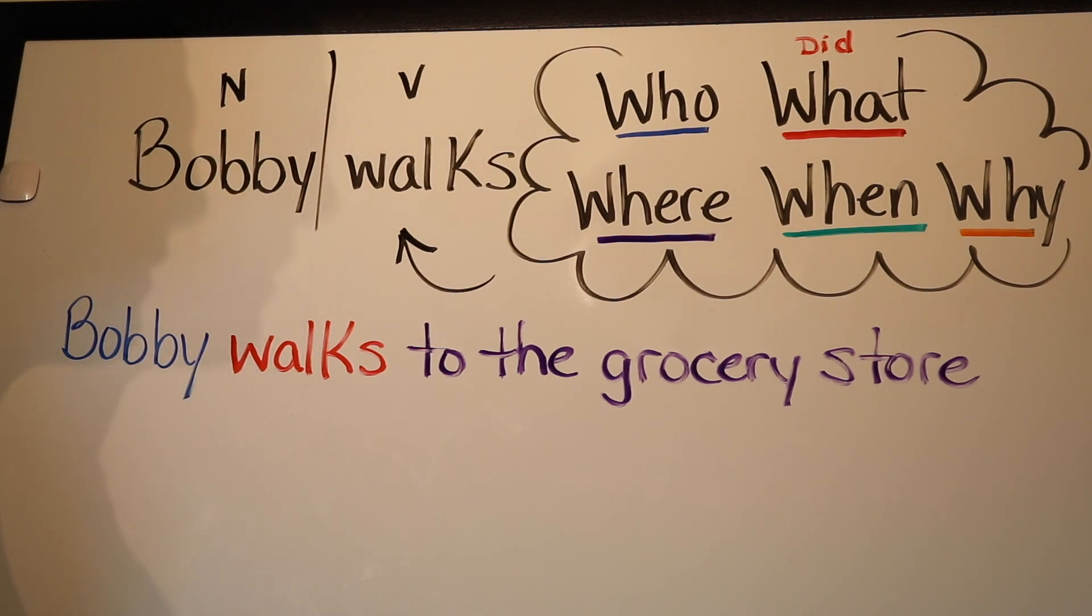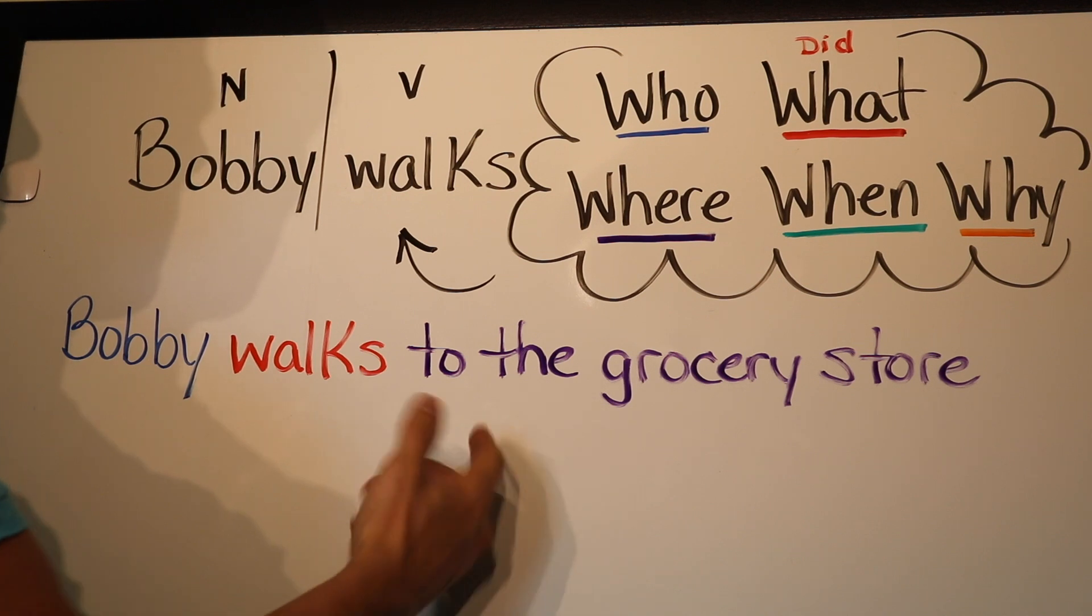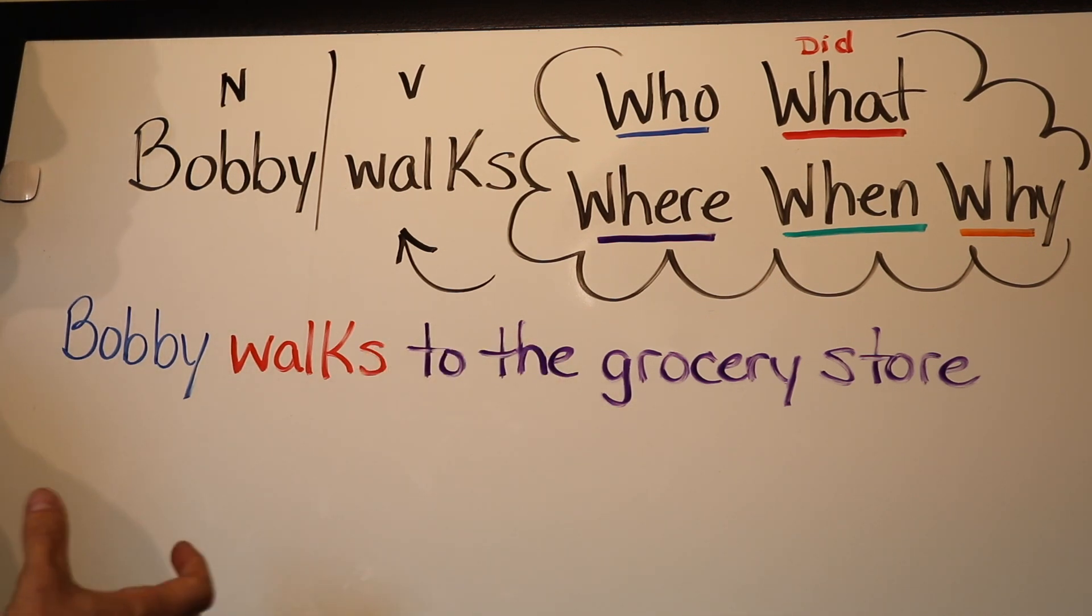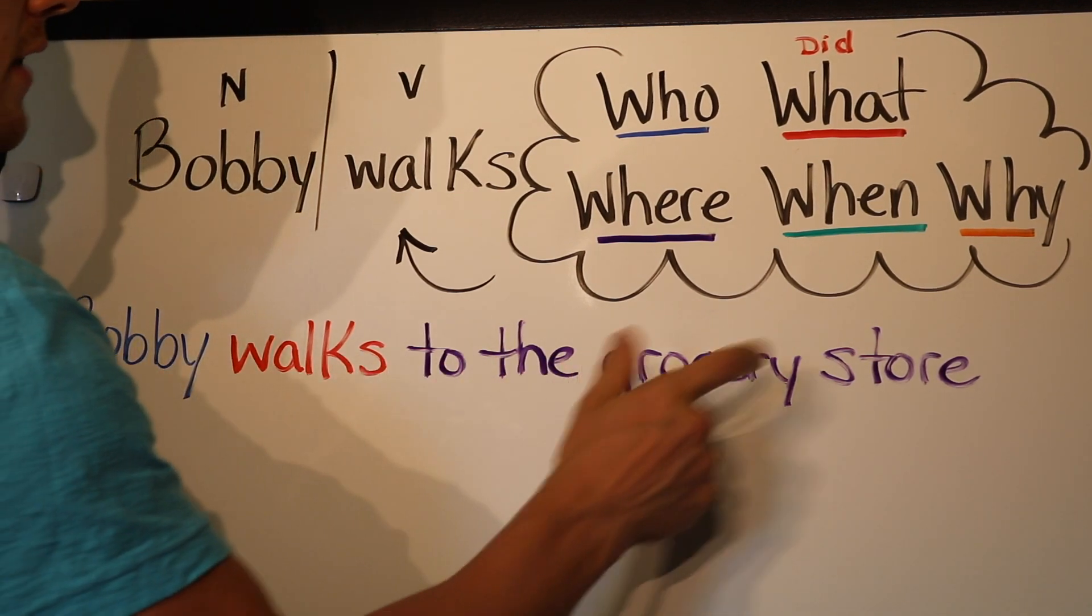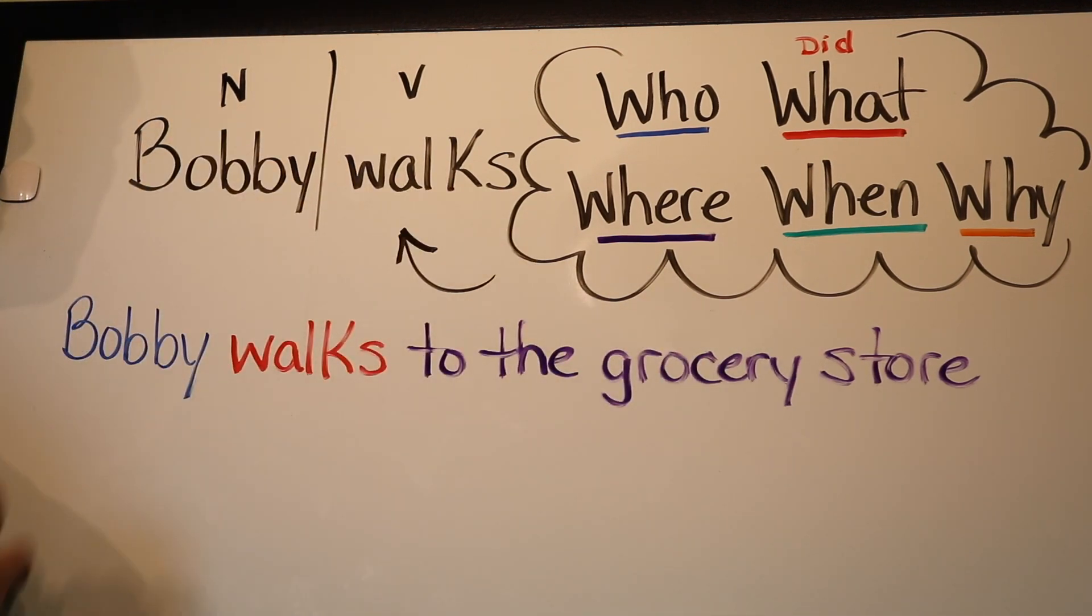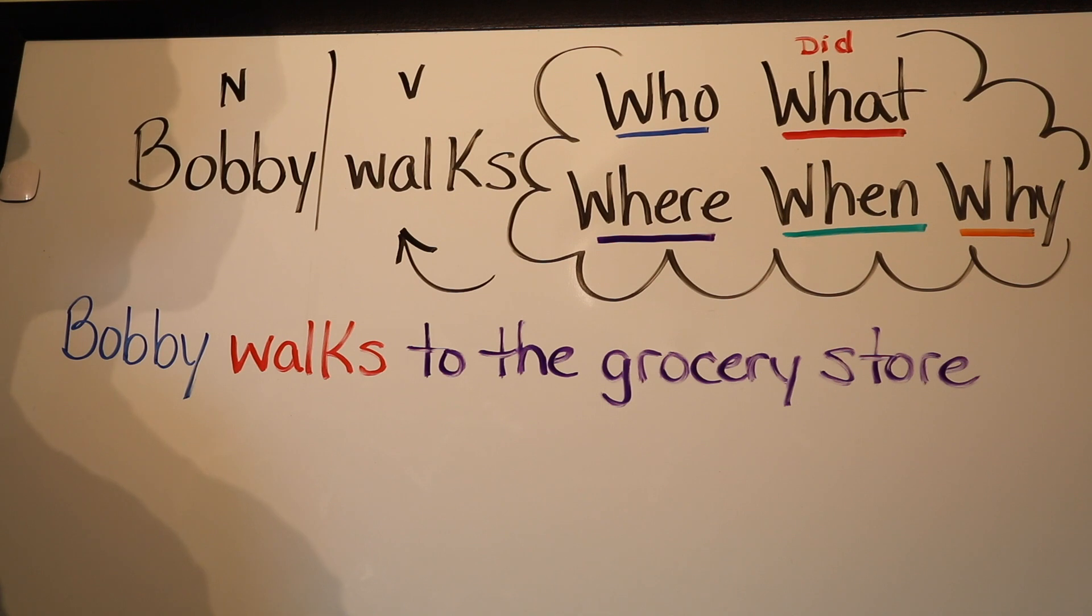Think of each word as a penny, as a cent, and 10 cents meaning 10 words. Because with 10 words they will write a fuller, more dynamic sentence with that. So right now I have one, two, three, four, five, six, I have six cents. I'm getting close, but now I want to ask myself, Bobby walks to the grocery store, when? When does he walk to the grocery store?